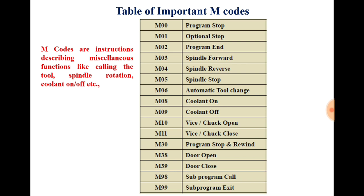The role of M code is to call the cutting tool. Because for processing the job you will require different types of cutting tools, and you can call your cutting tool with the help of M code. Also spindle on/off — you can turn the spindle on or off with the help of M code. Then coolant on/off — you can turn the coolant on and off with the help of M code. These are the few functions which can be performed with M codes.